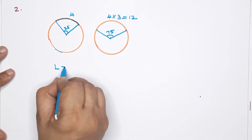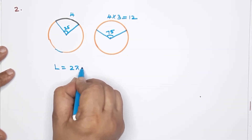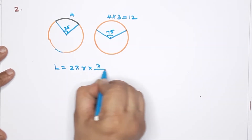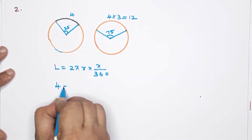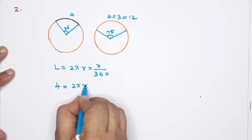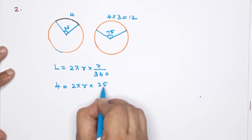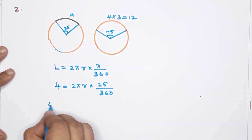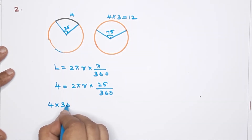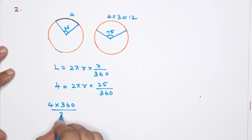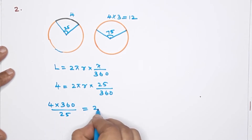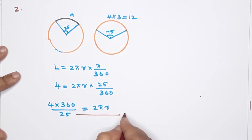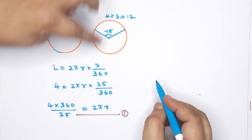Let's work through this step. The arc length formula is 2πr × (x/360) = 4, where x = 25. So 2πr × (25/360) = 4, which gives us 2πr = 4 × (360/25). This is the circumference of the circle.